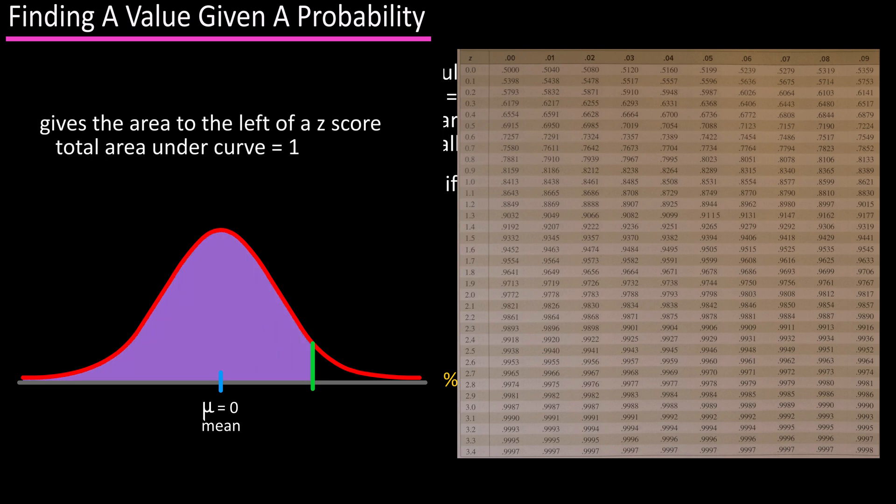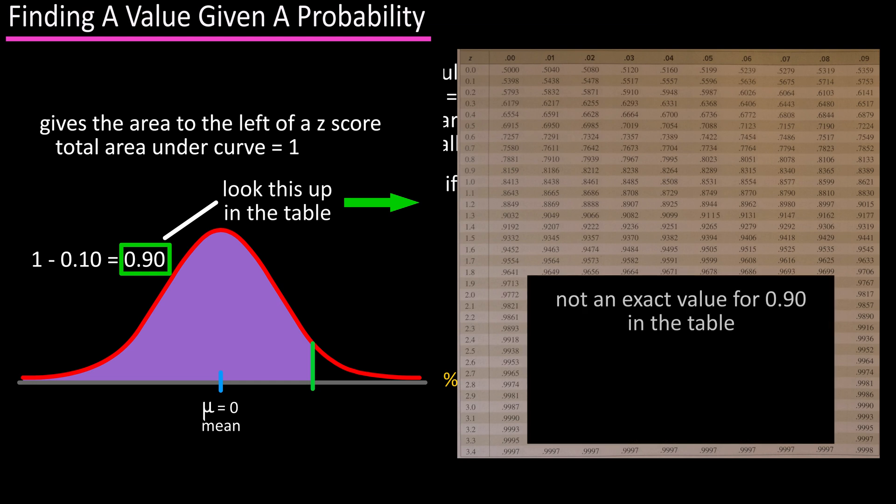So we know the total area under the curve is equal to 1. So we can subtract 10% or 0.10 from 1, which equals 90% or 0.90, and look up that value in the table. And in that table there's not an exact value for 0.90, so we'll use the closest value to that, which is 0.8997. Using the first column and first row, that z-score is 1.28.